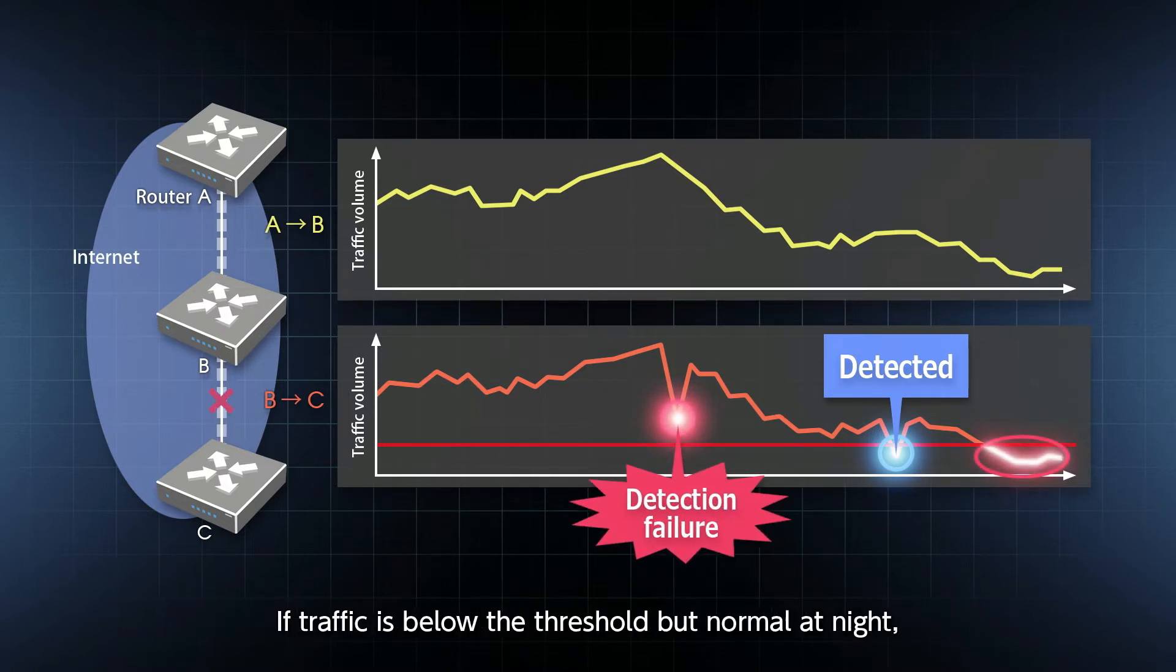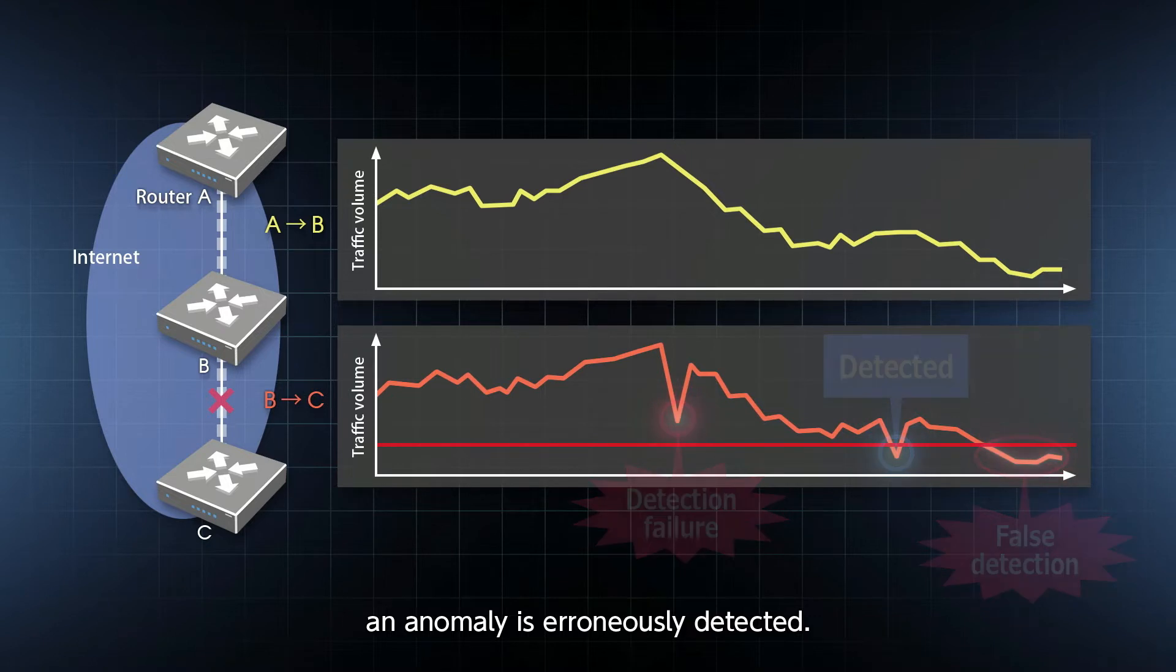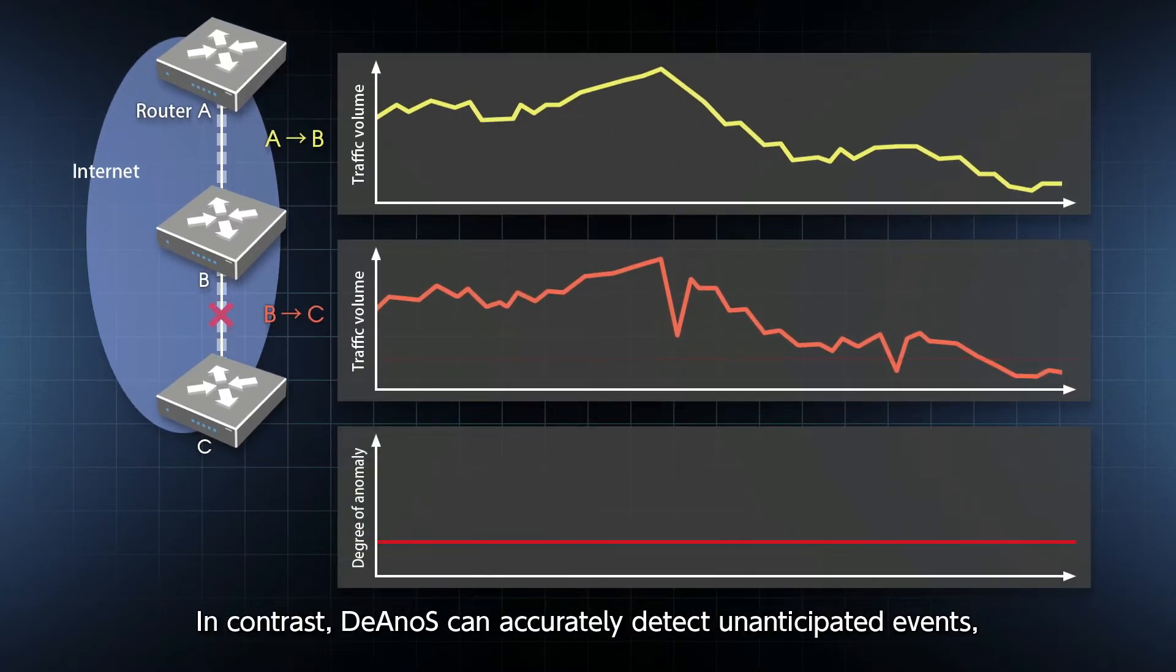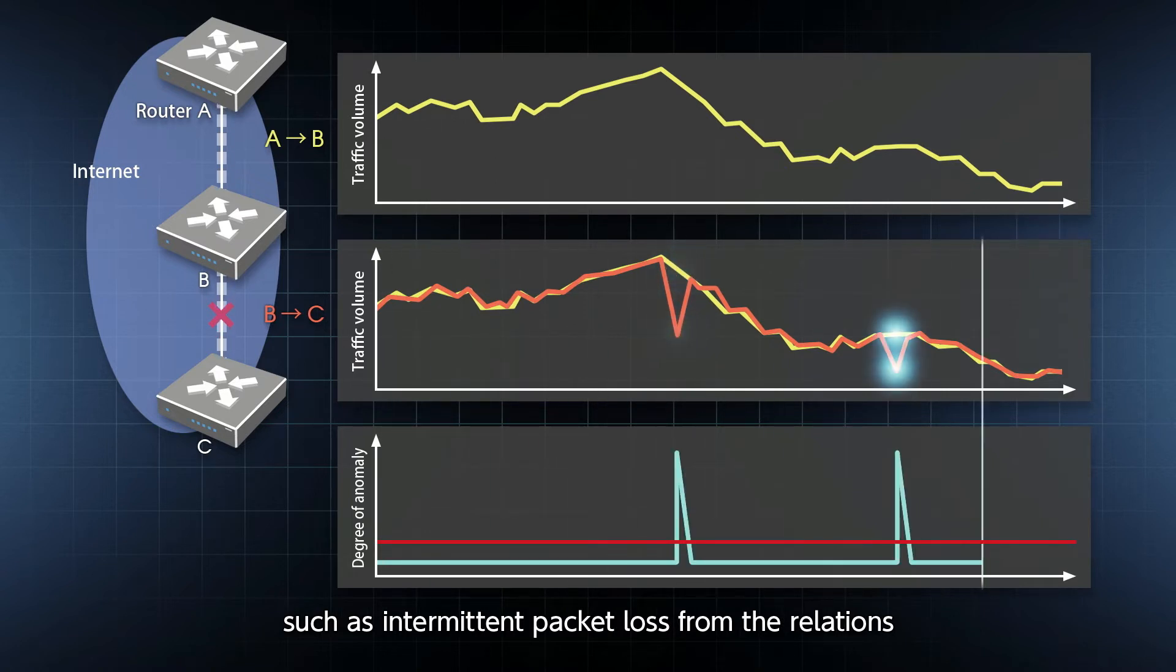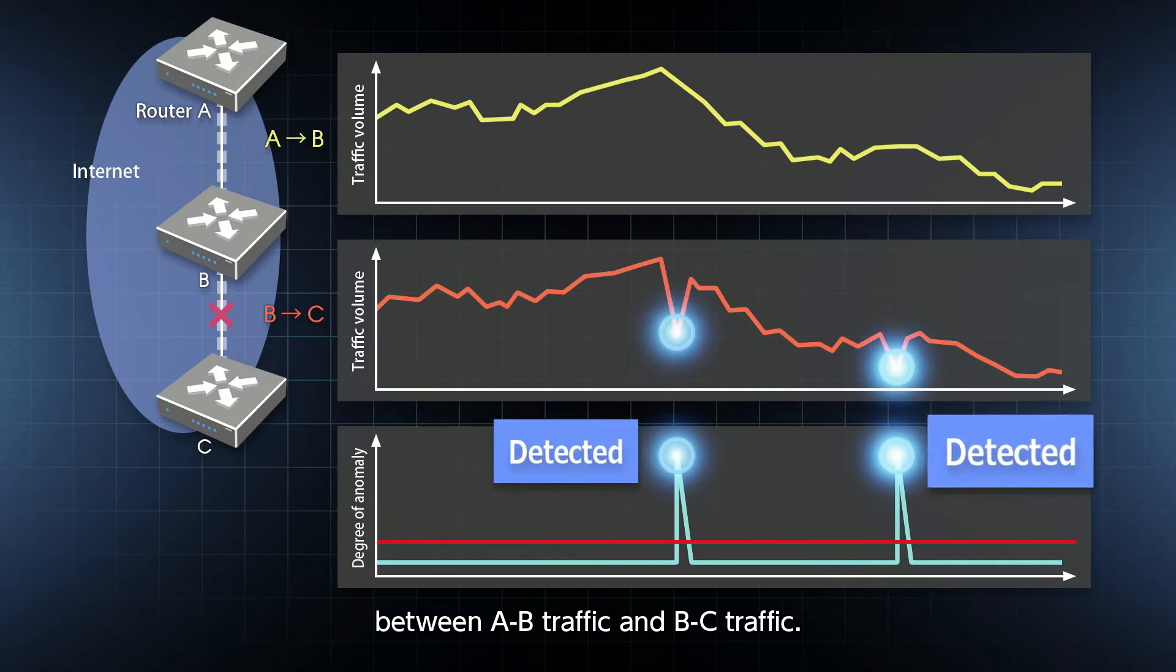If traffic is below the threshold but normal at night, an anomaly is erroneously detected. In contrast, DeAnoS can accurately detect unanticipated events such as intermittent packet loss from the relations between A to B traffic and B to C traffic.